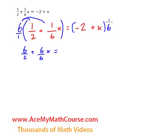Over on this side, 6 times negative 2 is negative 12, and 6 times x is 6x.